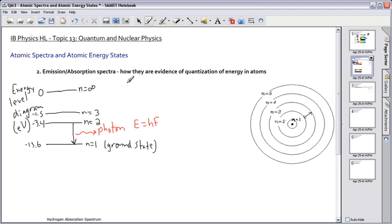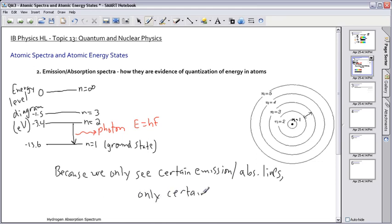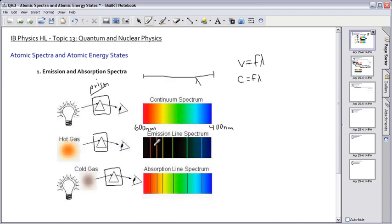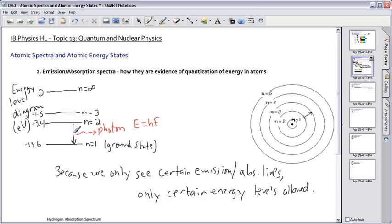So why is this feature right here, why does that actually tell us that quantization of energy? Well, we can talk about that. But I would say actually that because, maybe I'll write it down, so because we only see a certain emission absorption line, that means only certain energy levels allowed. That's really why. So it's really important to understand this because we only see certain emission lines. You know these lines right here? Because we only see certain ones of those, that tells us that they can only be in certain energy levels. And certain energy levels tells us that they're quantized.